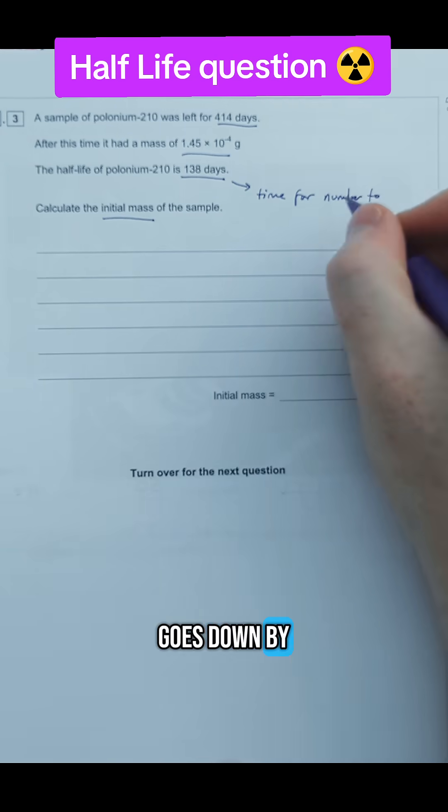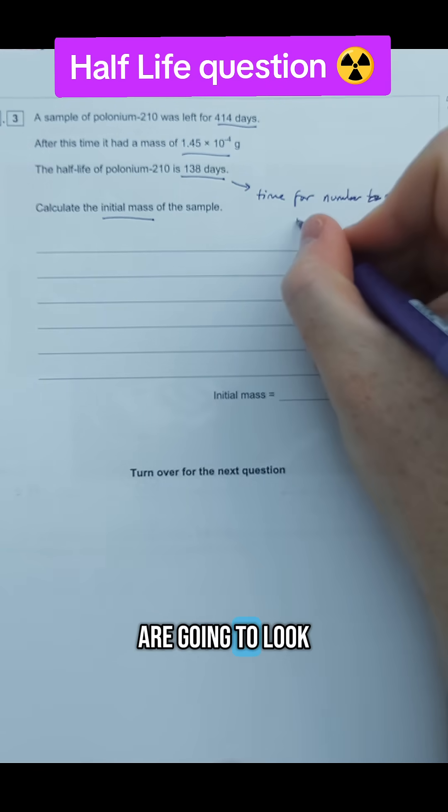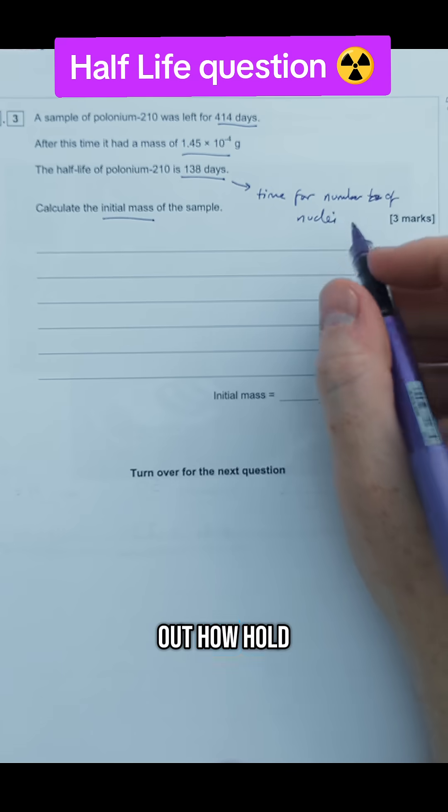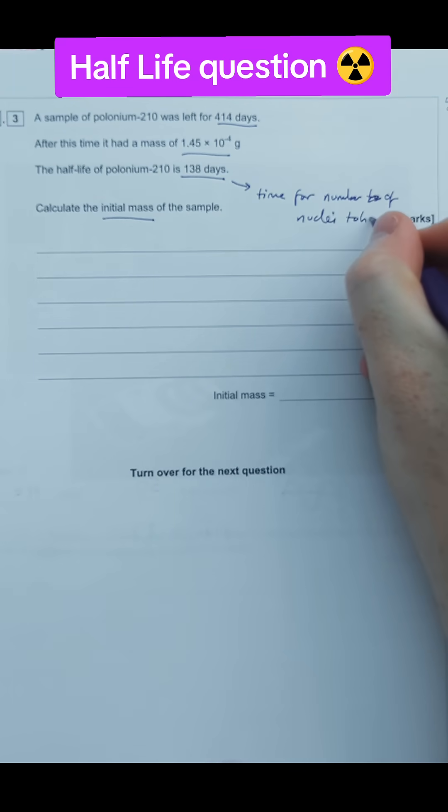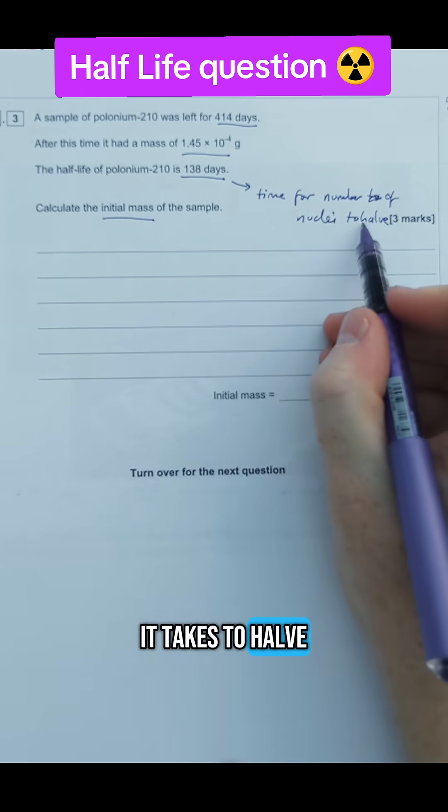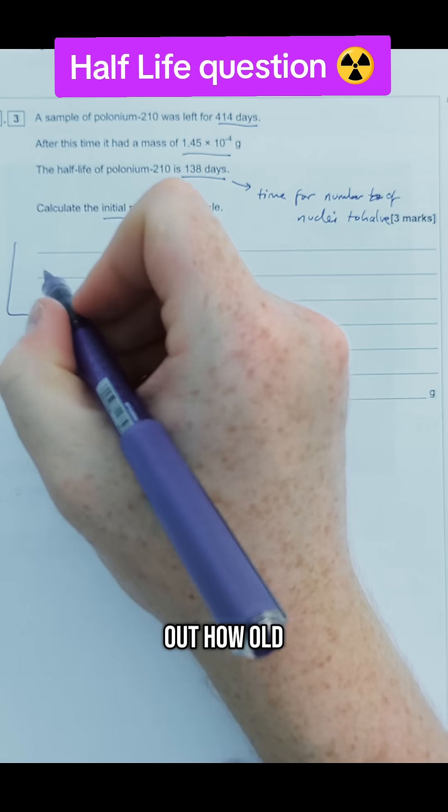So if it goes down by half then we are going to trace back and figure out how old was it initially. If you know how long it takes to half we can trace backwards and work out how old it was initially.